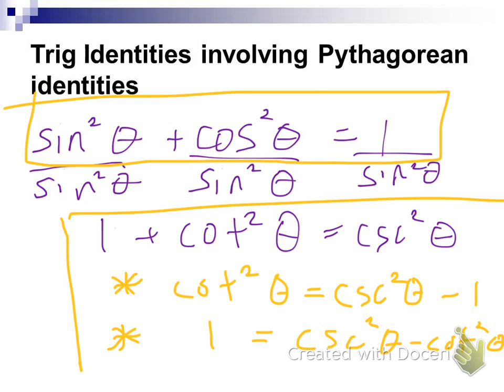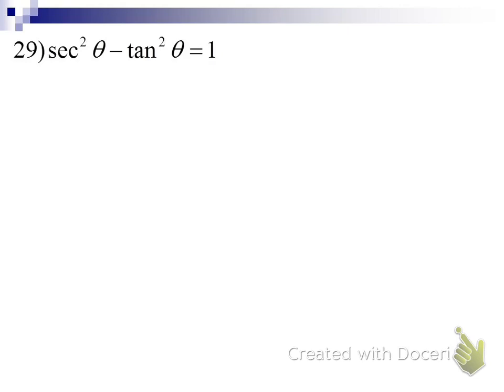Do you all have those written down on your identity sheet? We are ready to use these identities to do things like this: secant squared of theta minus tangent squared of theta is equal to one. As in all of our trig identities, there's going to be more than one way to work these problems. I want to focus today on using the Pythagorean identities to get this done.